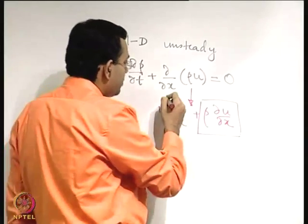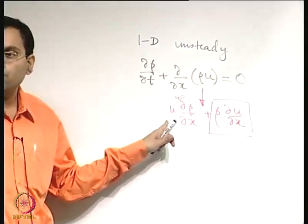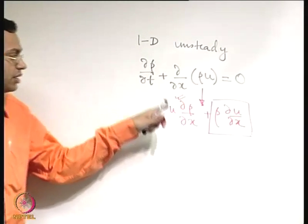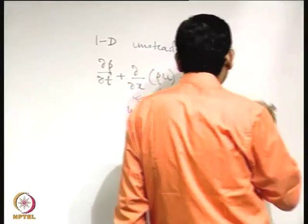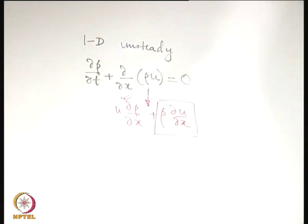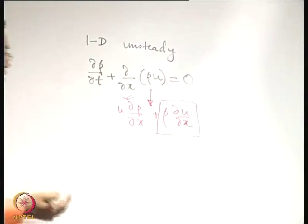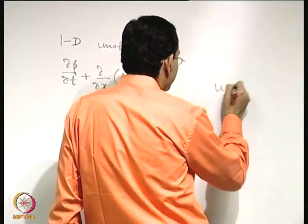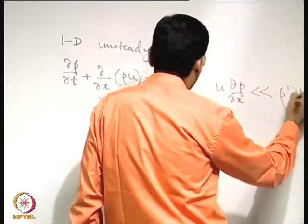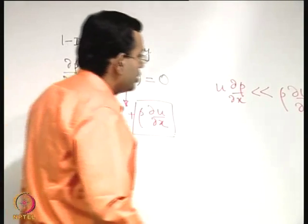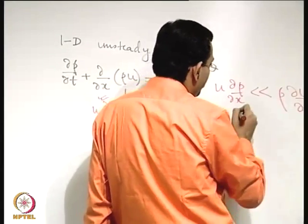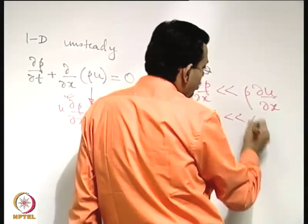If it is a compressible flow, we expect that this particular term would also turn out to be important. So if this term does not turn out to be important, then it is as good as treating the flow like an incompressible one. That means we are interested in a situation where you may have some effect giving rise to compressibility, but the compressibility is not substantial.